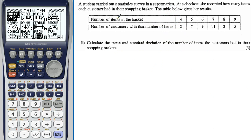So here we have a typical exam question. It concerns itself with the number of items going through a checkout. We've got the various values here and the number of times that they occurred. We need to find the mean and standard deviation of the number of items that customers had.